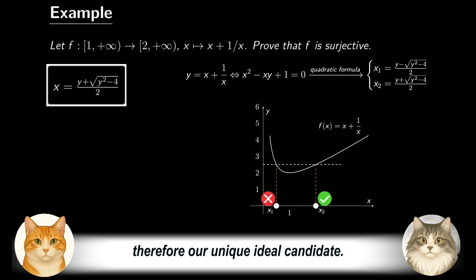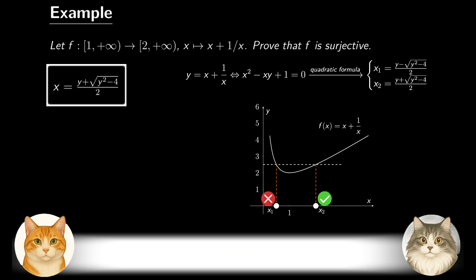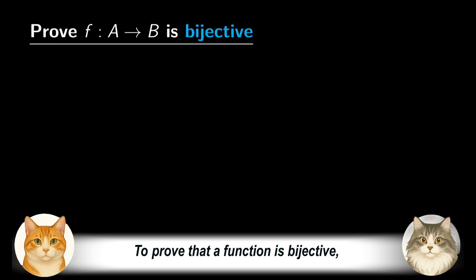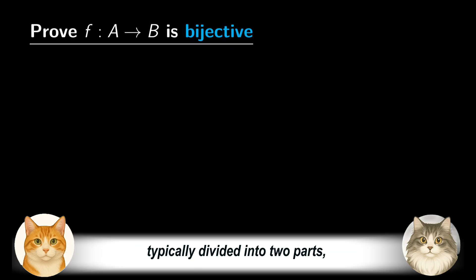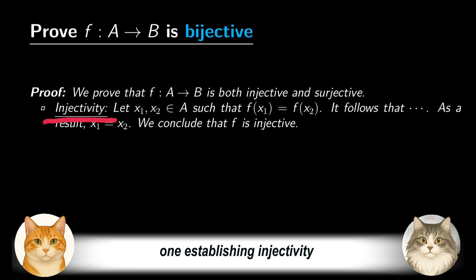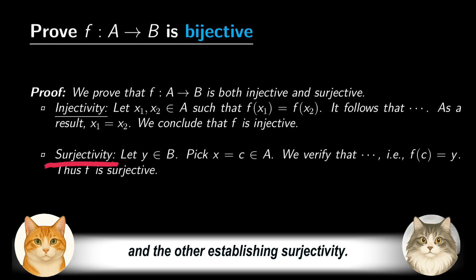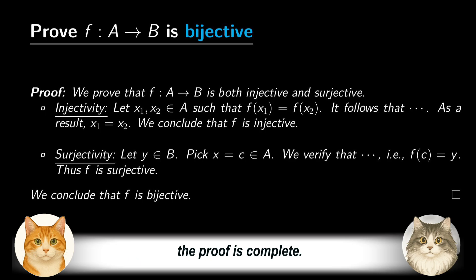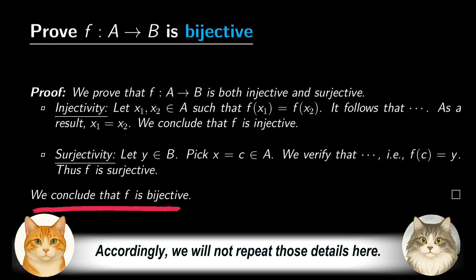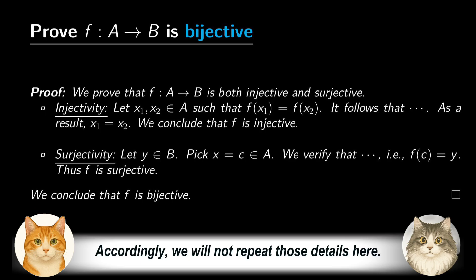To prove that a function is bijective, the argument is typically divided into two parts. One establishing injectivity, and the other establishing surjectivity. Once both properties have been verified, the proof is complete. Accordingly, we will not repeat those details here.